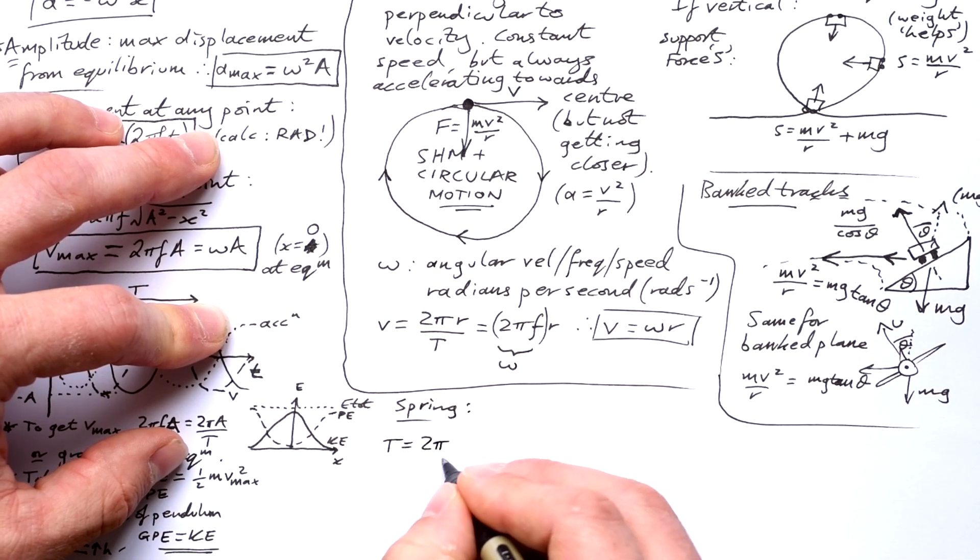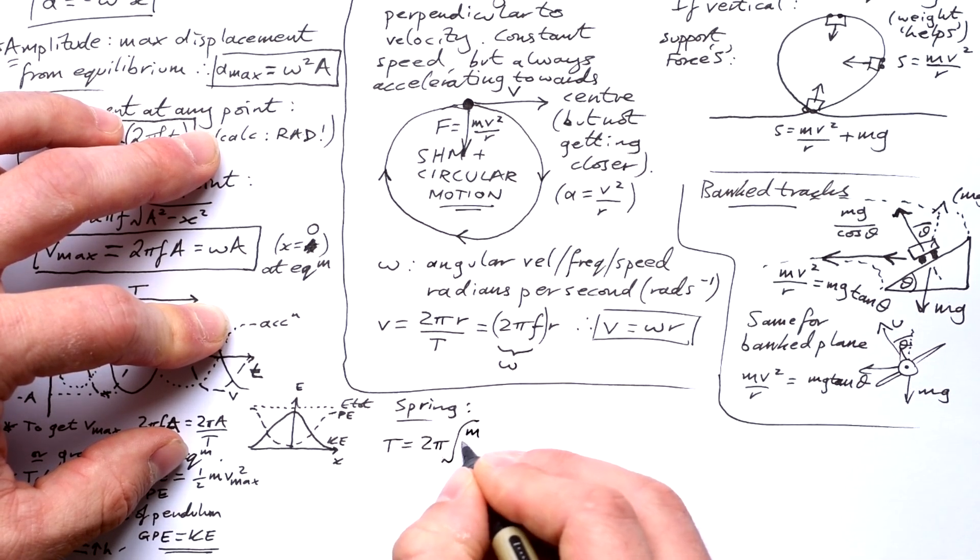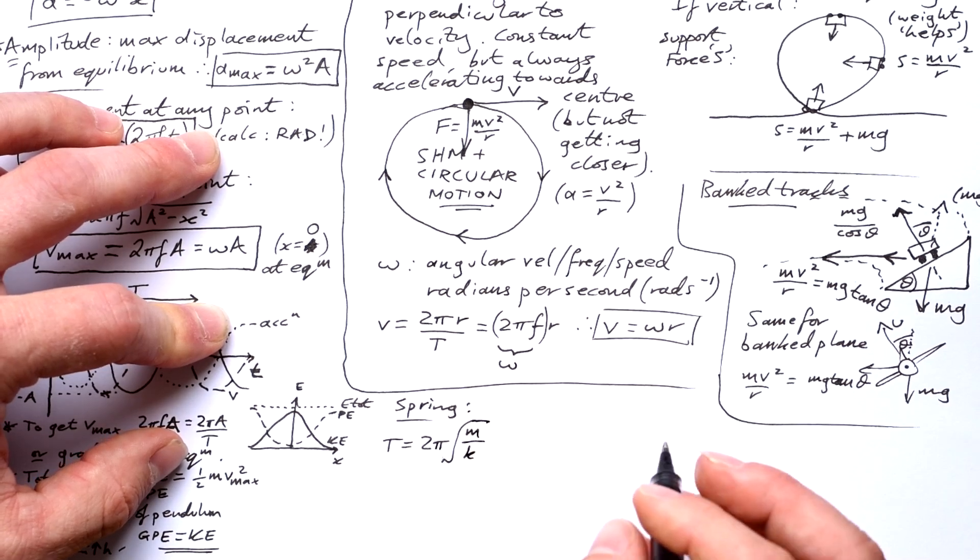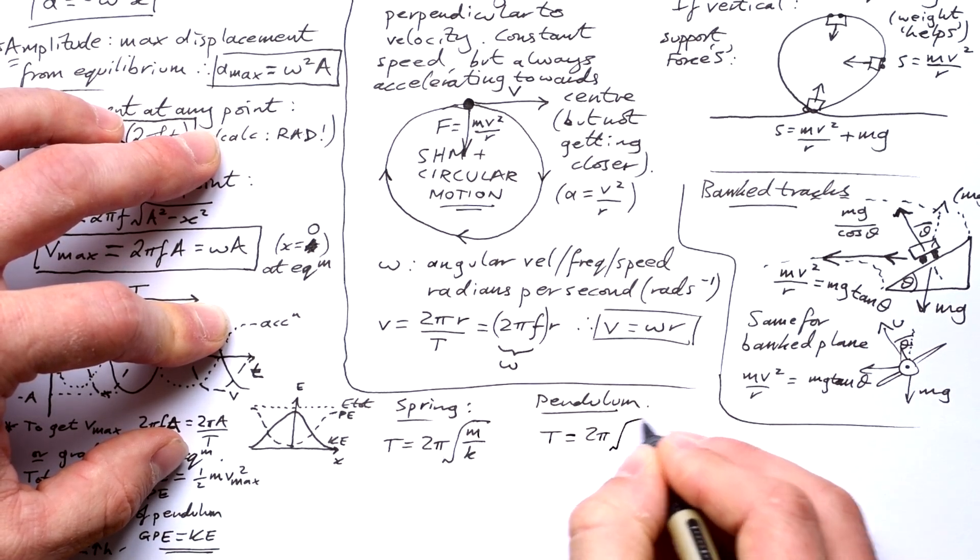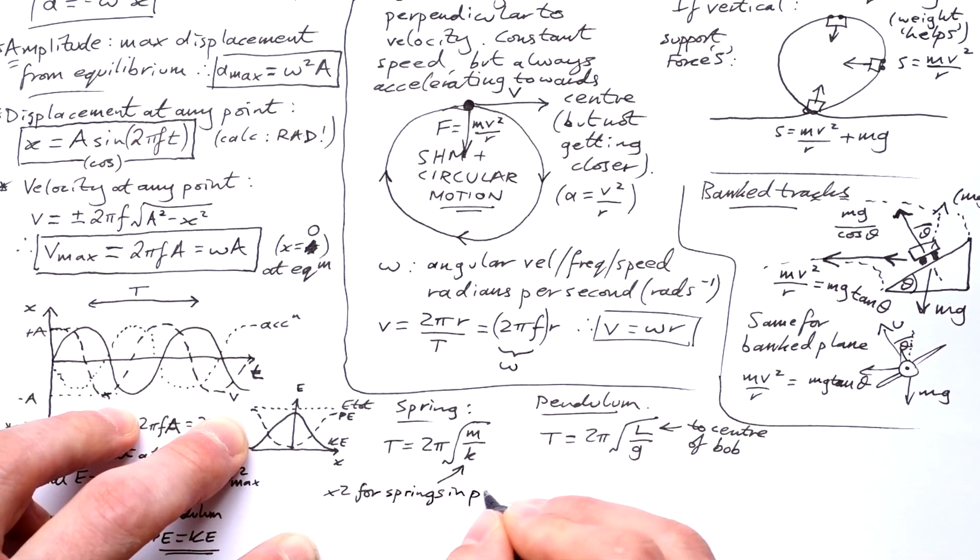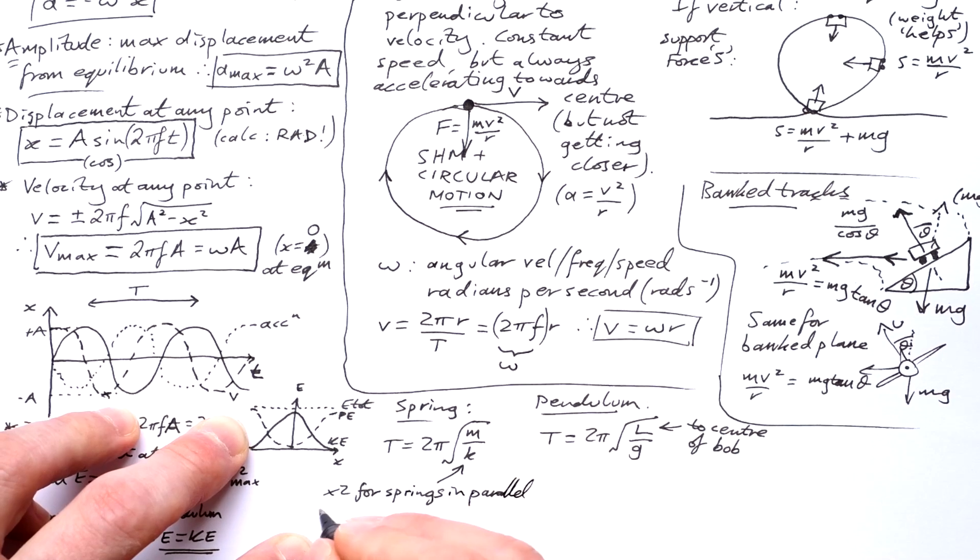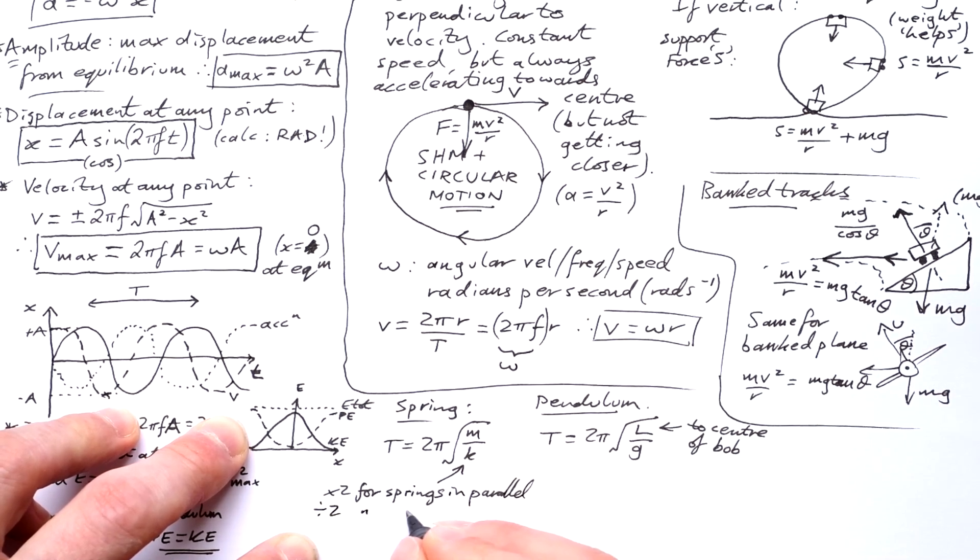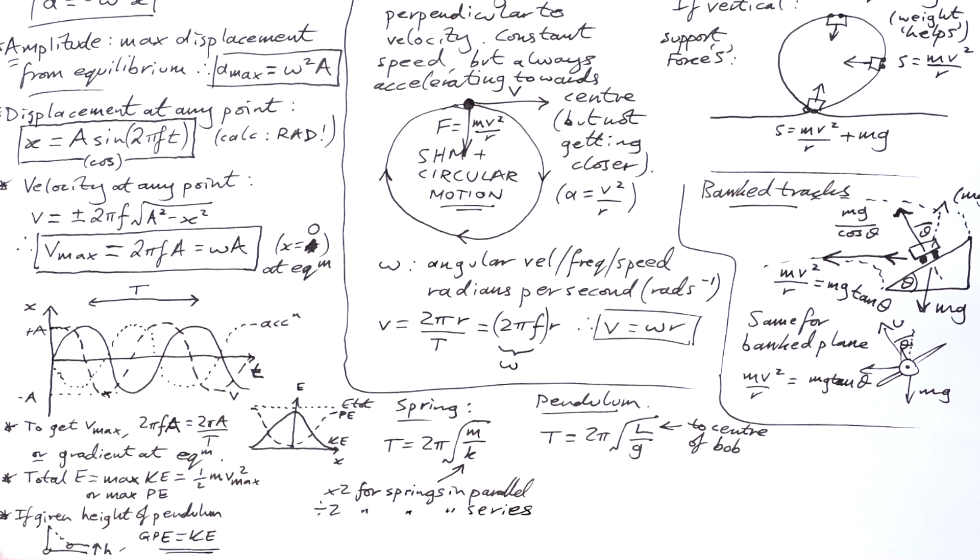We have two equations that tell us what the time periods are for a spring and a pendulum. For a spring, T equals two pi root M over K. And for a pendulum, it's two pi root L over G. Bear in mind that you might get asked, how does the frequency and time period change when you put two springs in parallel or in series? K doubles when we have springs in parallel and halves when we have springs in series.